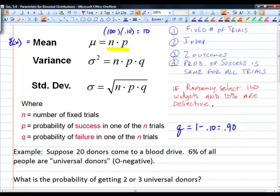The variance here is n times p times q. The standard deviation is the square root of n times p times q, because the standard deviation is always the square root of the variance. These are formulas that you can put on your formula sheet.